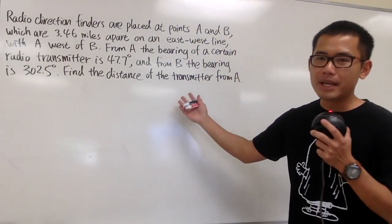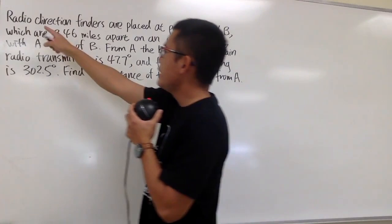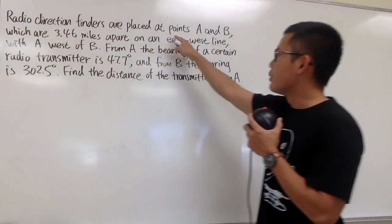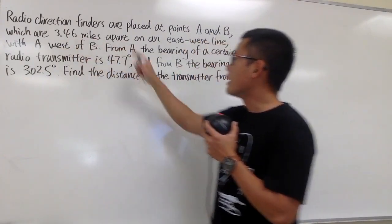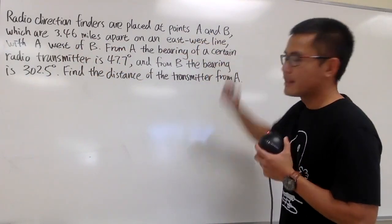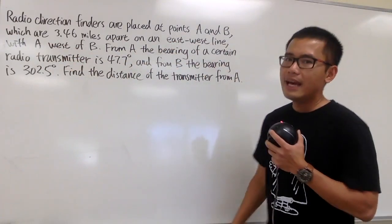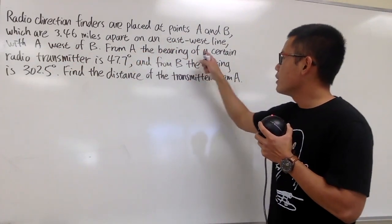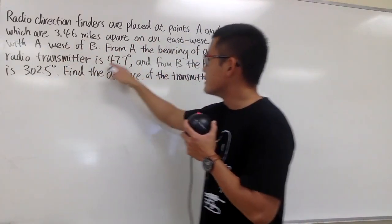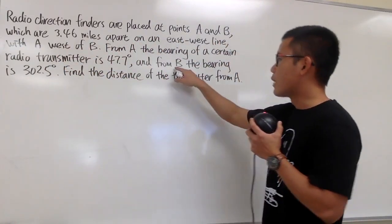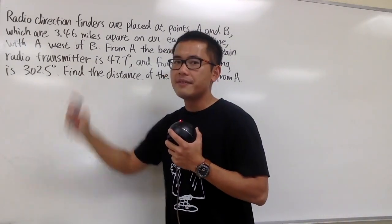Let me show you how to solve this application problem that involves bearing. It says radial direction finders are placed at points A and B, which are 3.46 miles apart on an east-west line. We know A is west of B. From A, the bearing of a certain radial transmitter is 47.7 degrees, and from B, the bearing is 302.5 degrees.